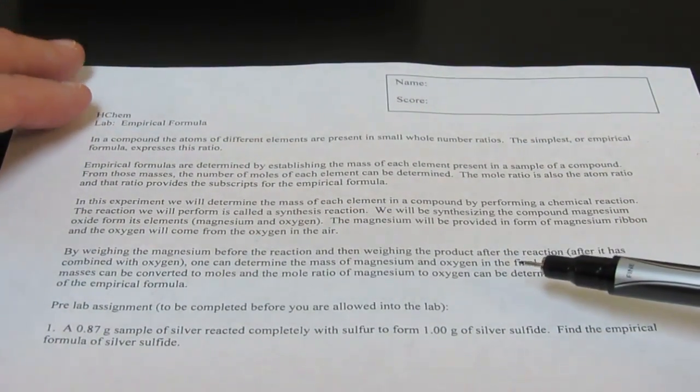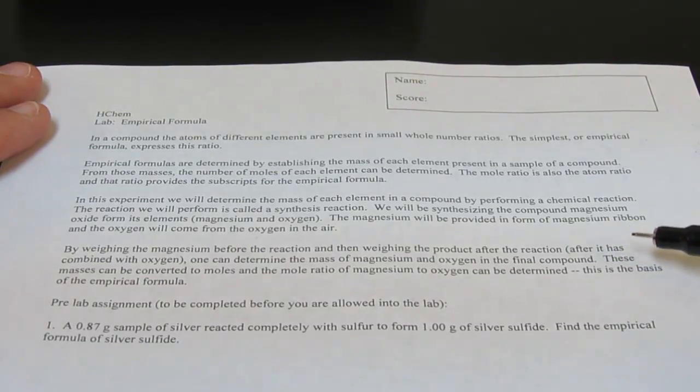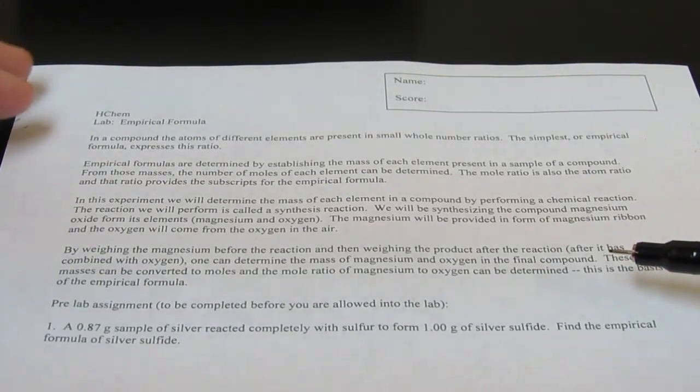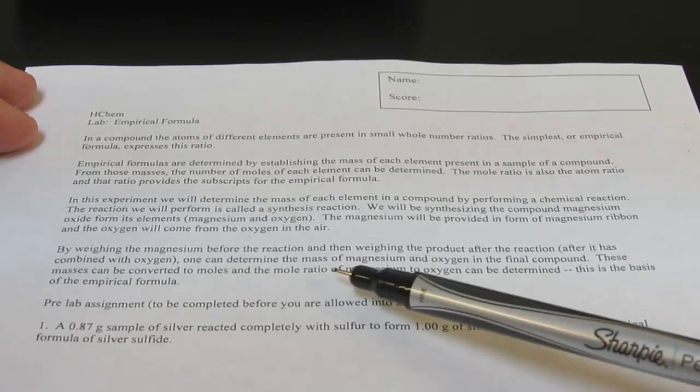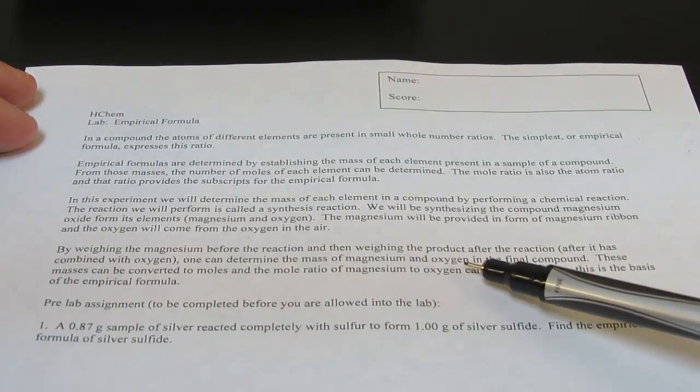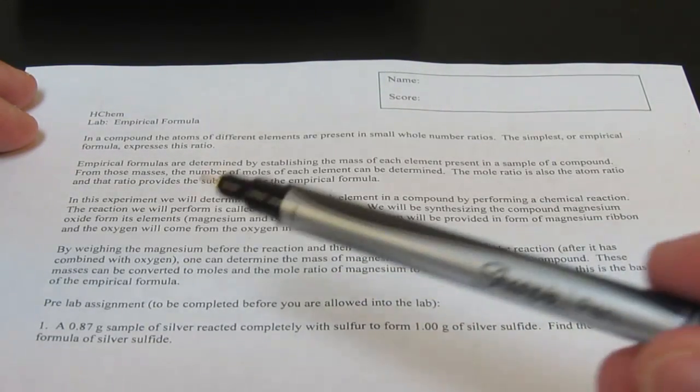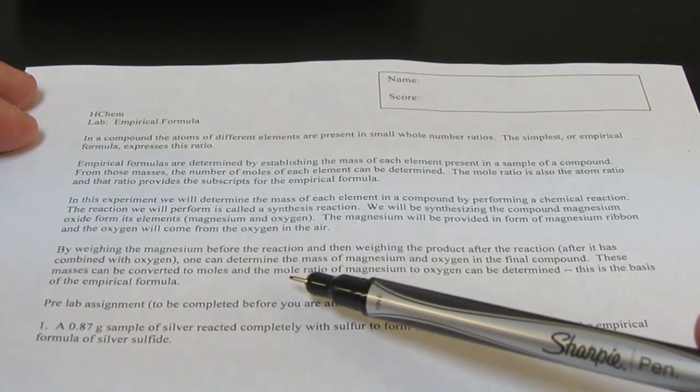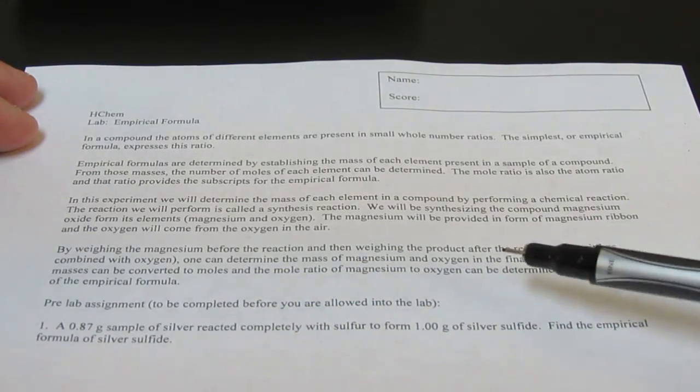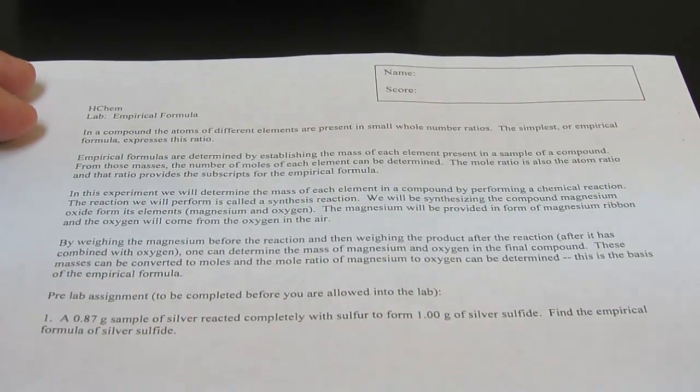By weighing the magnesium before the reaction and then weighing the product after the reaction, that means after it's combined with oxygen, we can then determine the mass of the magnesium and oxygen in the final compound. These masses can be converted to moles, and the mole ratio of magnesium to oxygen can then be determined. This is the basis of the empirical formula.